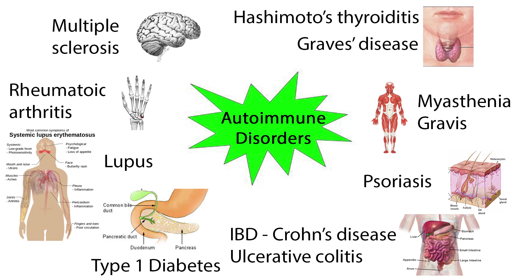Inflammatory bowel disease occurs when the immune system attacks the lining of the intestines, causing episodes of abdominal pain, diarrhea, urgent bowel movements, fever, and weight loss. There are two forms of IBD: Crohn's disease and ulcerative colitis. In psoriasis, overactive immune system T cells collect in the skin, stimulating the skin cells to reproduce rapidly, forming scaly plaques on the skin. In Myasthenia gravis, antibodies bind to nerves and make them unable to stimulate muscles properly, seen as weakness that gets worse with activity.